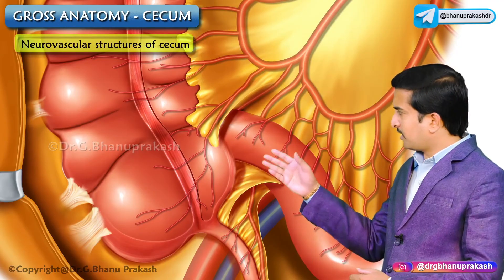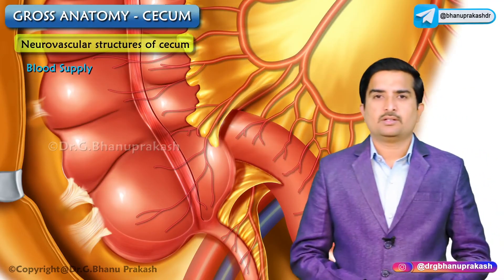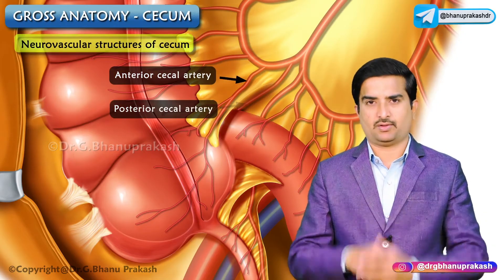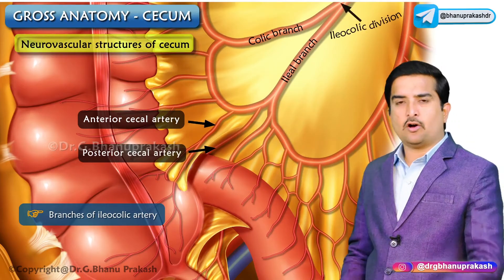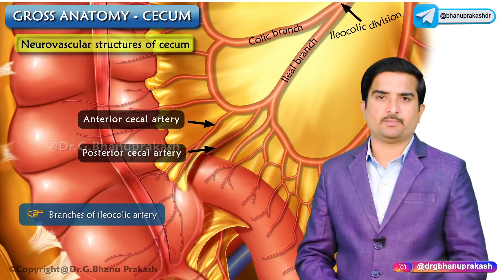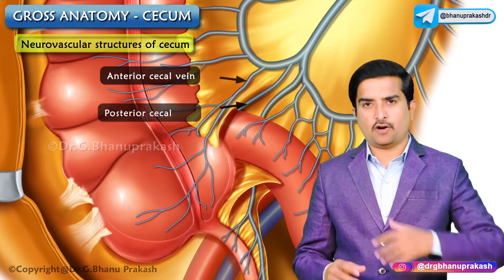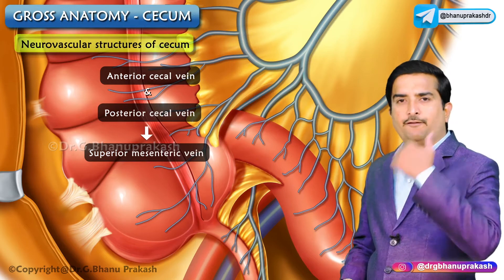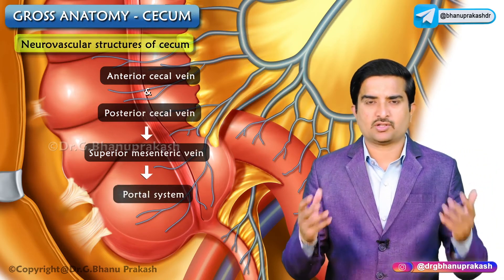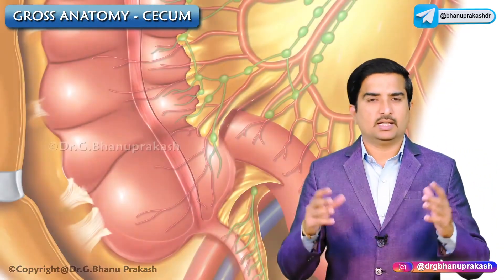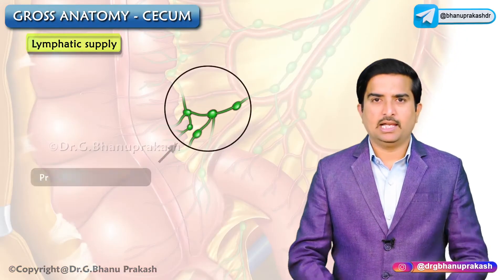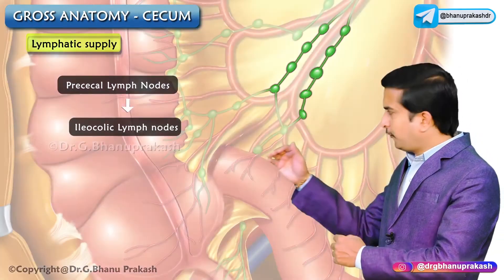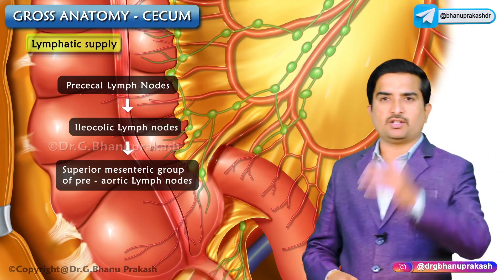The blood supply of the cecum comes from the anterior and posterior cecal arteries, which are branches of the ileocolic artery. The veins of the cecum follow the arteries and drain into the superior mesenteric vein, which drains into the portal system. Lymph from the cecum drains into the ileocolic lymph nodes, which finally drain into the superior mesenteric group of pre-aortic lymph nodes.